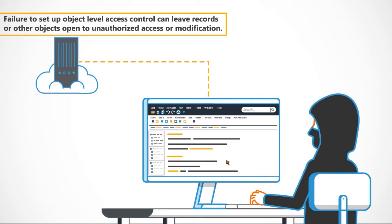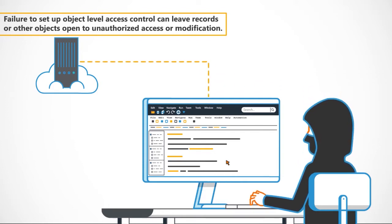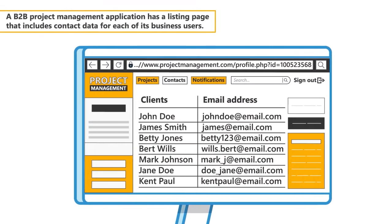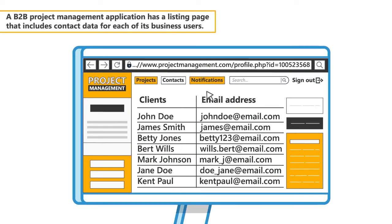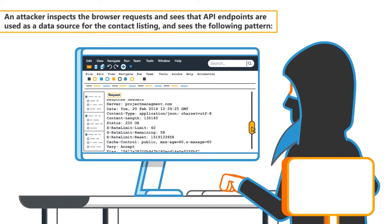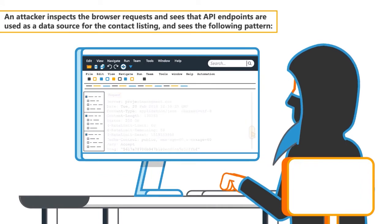To understand missing object level access control, let's look at an example. A B2B project management application has a listing page that includes contact data for each of its business users. An attacker inspects the browser requests and sees that API endpoints are used as a data source for the contact listing, and sees the following pattern.